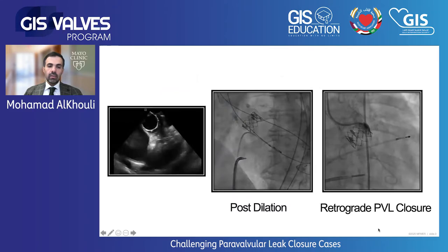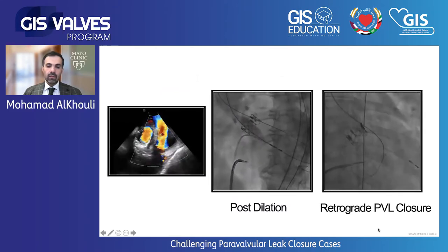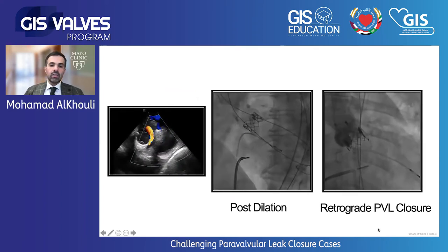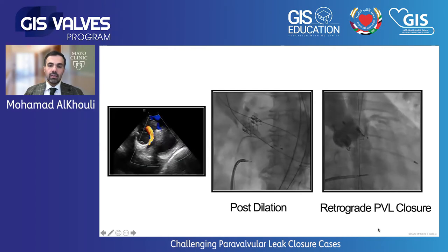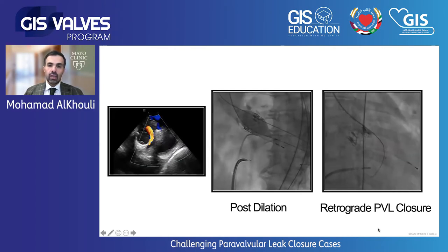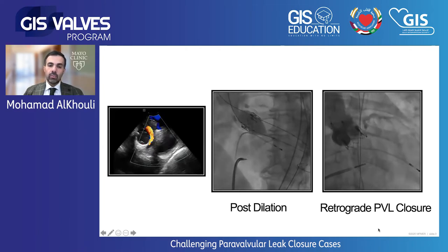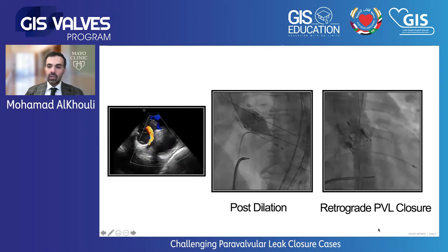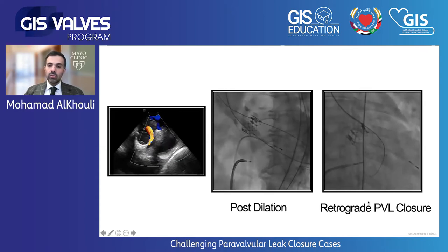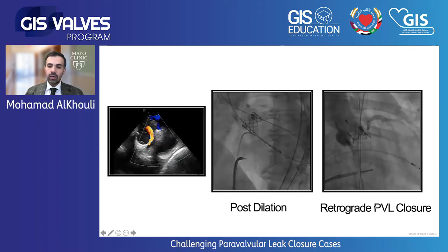The case was done with moderate sedation under ICE guidance given her comorbidities. The plan was to try to see if the valve could be expanded further with a balloon. As we know, the XT valve doesn't do that very well, but nonetheless it was a low-risk attempt. We attempted to post-dilate the valve and it did not change the leak. The second approach was to go retrograde, put a wire in the LV, and close the leak through that route.